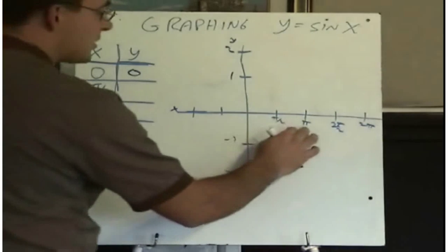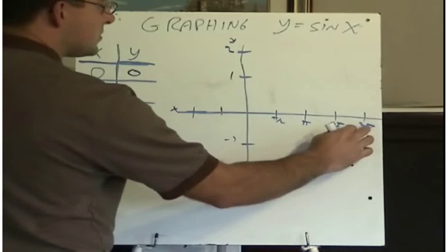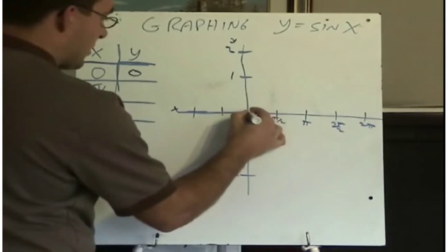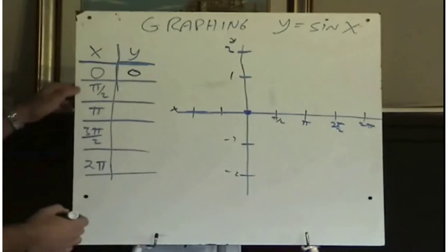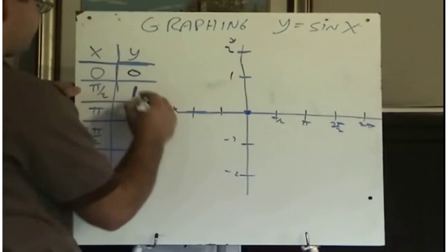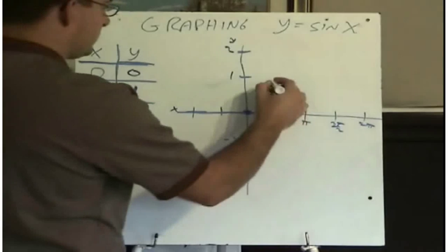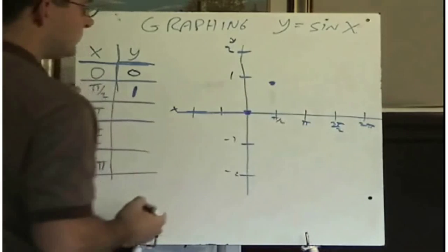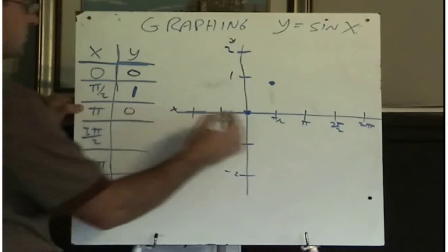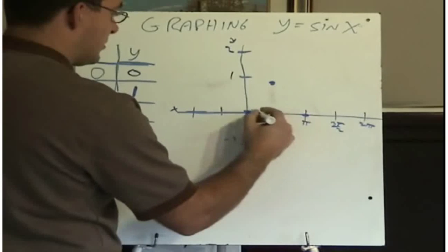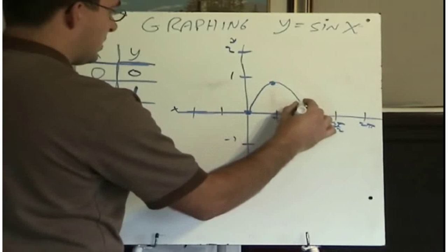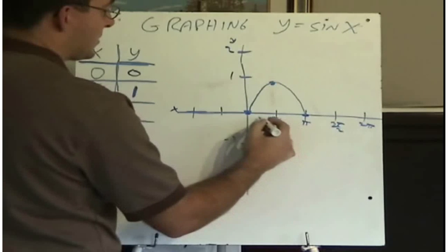90 degrees, 180 degrees, 270 degrees, and 360 degrees. So (0, 0) is a point right there. When I put pi over 2 in, sine of pi over 2 is 1. When I put pi into the calculator, the sine of pi is 0. So this graph has come up to here and come back down to 0.